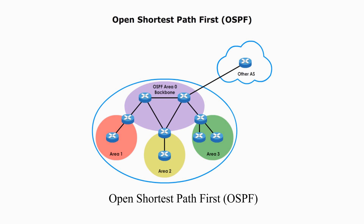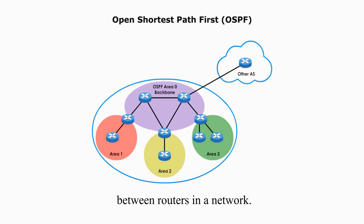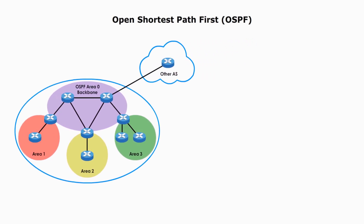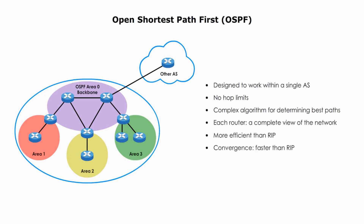Open Shortest Path First, OSPF, is a link state routing protocol used to exchange routing information between routers in a network. It is designed to work within a single autonomous system. There is no hop limit. It uses a complex algorithm for determining best paths, and each router has a complete view of the network. It is more efficient than RIP, convergence is much faster than RIP, and it supports IPv6 starting with OSPF version 3.